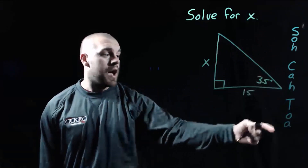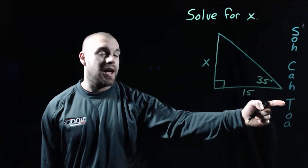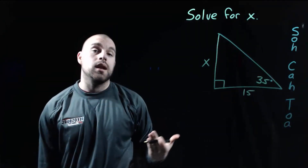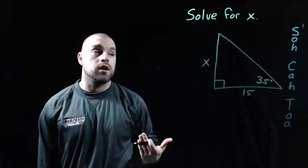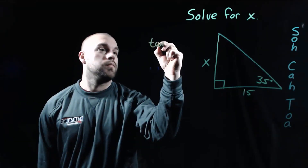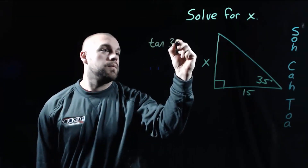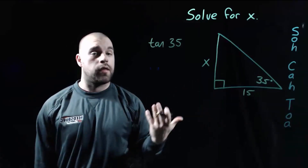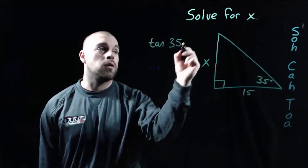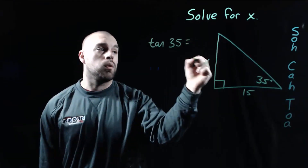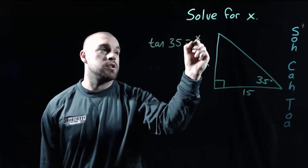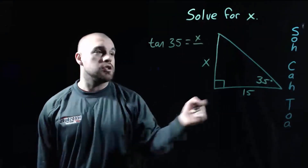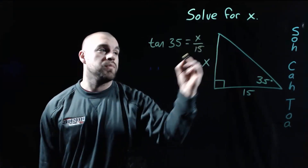So if we check out our SOHCAHTOA acronym, the tangent uses the opposite and the adjacent. So we need to set up a tangent equation. We go tangent of the angle we're looking at, the 35-degree angle, equals the opposite side X over the adjacent side 15.